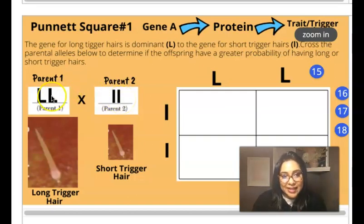So parent one is homozygous for dominant long trigger hairs. Again, here's a long trigger hair. And parent two has two recessive alleles for trigger hair. So it's going to code for the short trigger hair trait.